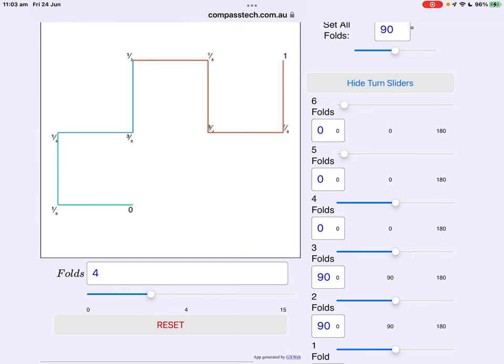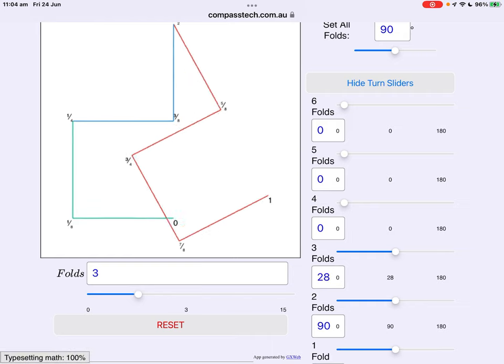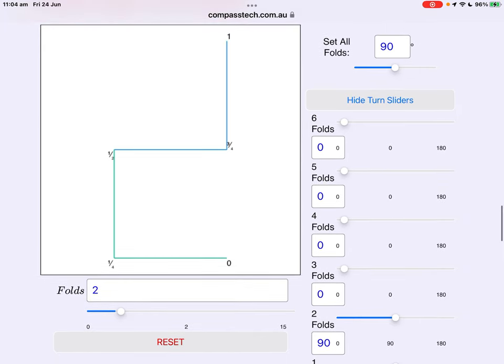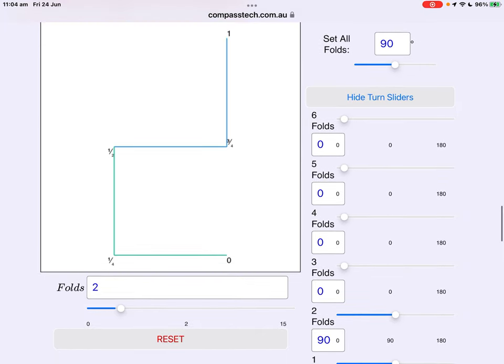After three folds one-eighth, one-quarter, three-eighths, a half and so on. The eighths are in order. If we fold again after two folds there are three turns, one-quarter, one-half and three-quarters.